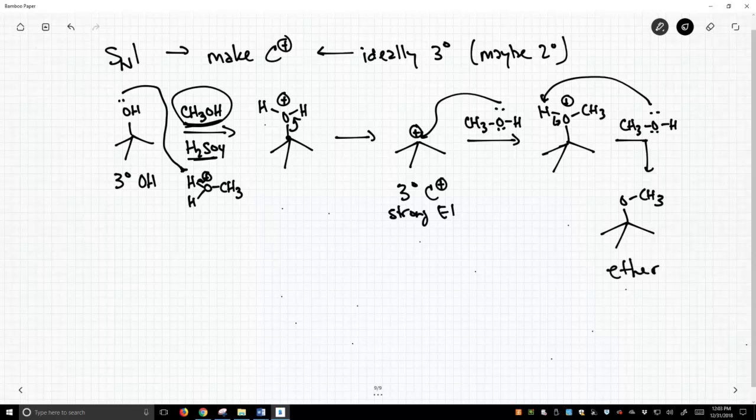How did we form it? We made a carbocation and we did an SN1. We formed a carbocation and attacked it with a weak nucleophile, so it's an SN1 reaction. This is one common way to make many types of ethers. You don't have to have a tertiary carbocation, but tertiary or secondary. This won't work with a primary.